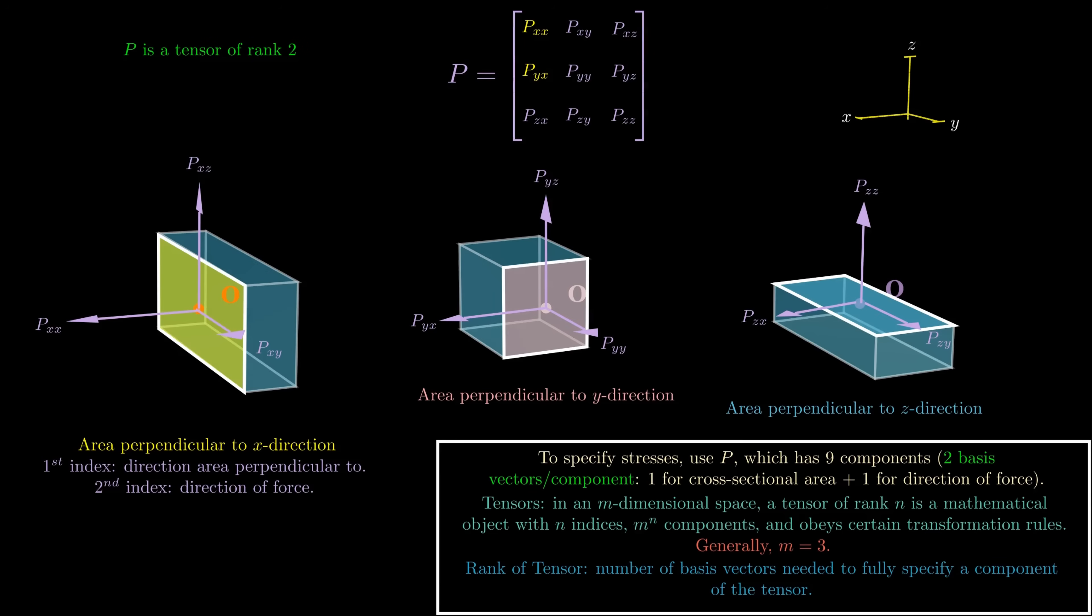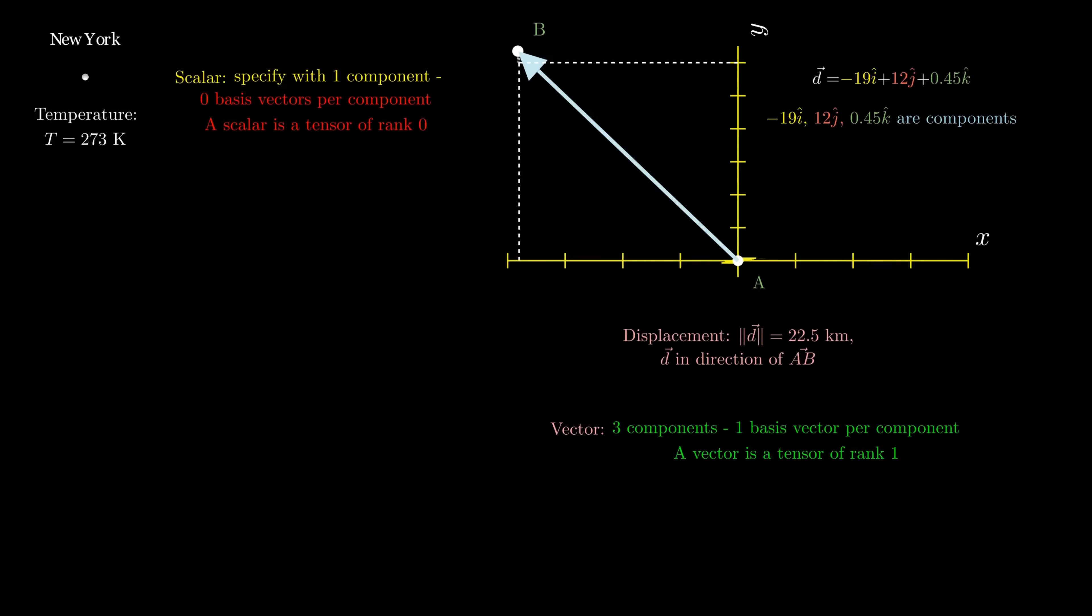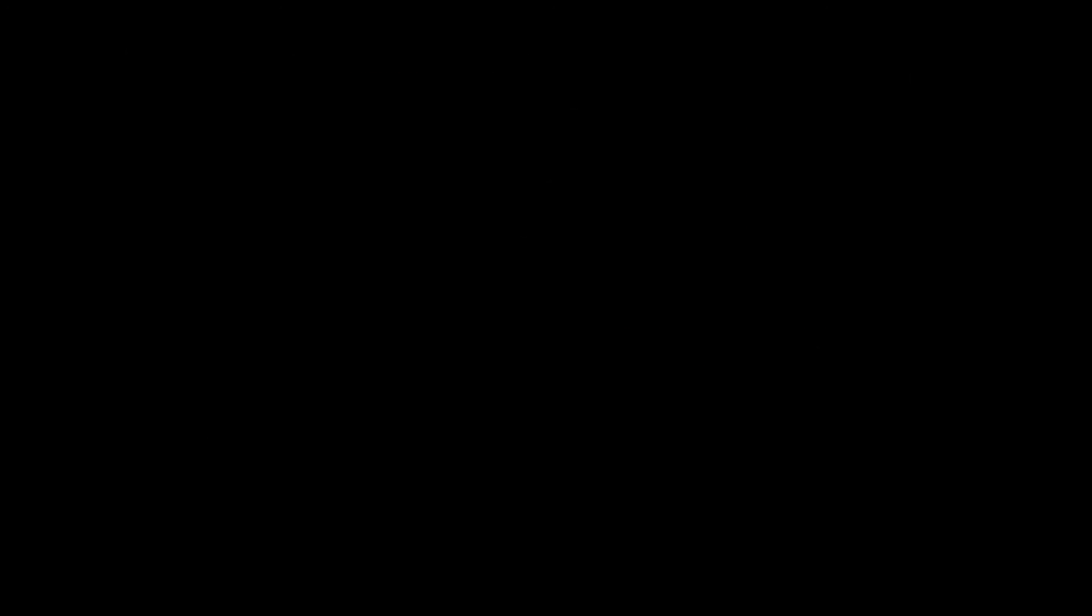Now, the definition of tensors that I wrote down here says that the number of components in my tensor equals m to the power n. Let's verify this from the three tensors we just discussed. My scalar has a rank of zero, so it has three to the power zero or one component, which is obviously true. My vector has a rank of one, so it has three to the power one or three components, which makes sense. And P has a rank of two, so it has three to the power two or nine components, which also makes sense.